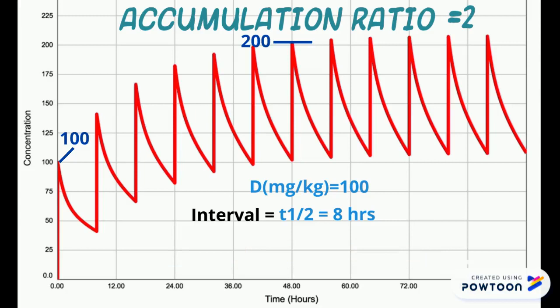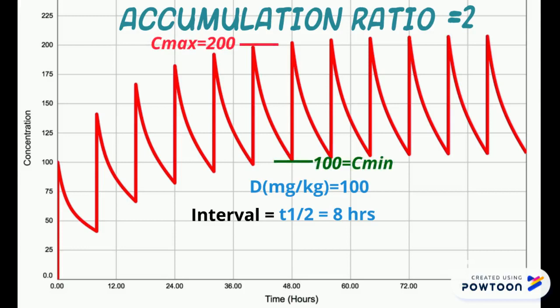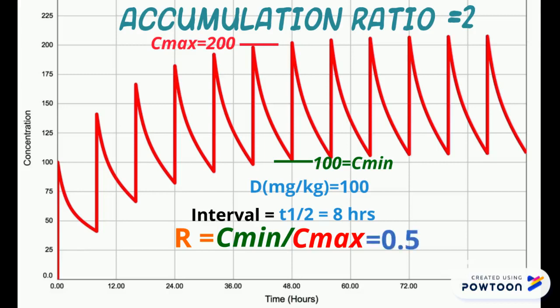Another way of calculating the accumulation factor is to calculate the fraction that remains in plasma after each time interval — call it R. R equals C-min divided by C-max, where C-min is the minimum concentration at the end of the interval and C-max is the maximum concentration reached between intervals. In this case we lose 50% of the drug concentration between intervals because we're administering at the half-life. We can also calculate R by applying the formula using the elimination constant and taking the exponential of the resulting value. The accumulation factor is then simply 1 divided by (1 − R), which again gives us two for this example.